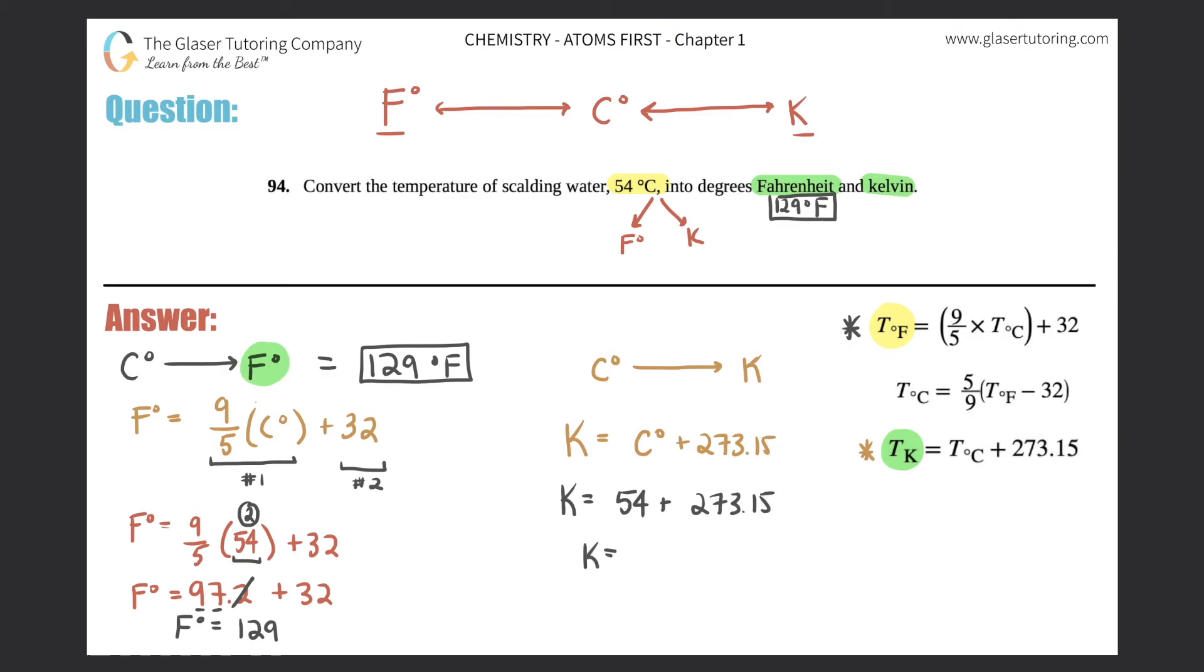So your Kelvin equals, so 54 plus 273.15 is 327.15. But remember your sig figs. Your rules for addition and subtraction are the least after the decimal. For this one, there was two after the decimal, but for your 54, there was nothing after the decimal. So there should be nothing after the decimal.